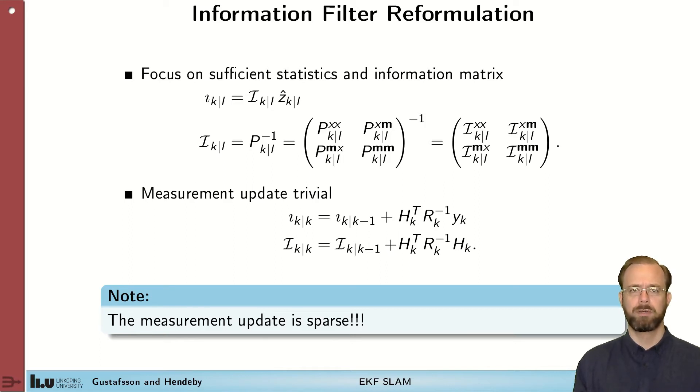So the information filter is an equivalent formulation of the Kalman filter though formulated in terms of the information function which is the inverse of the covariance and the information filter state which is the information times the normal state. You can read more about this in the textbook. Given the information state and the information we can formulate the measurement update in the filter in this way.